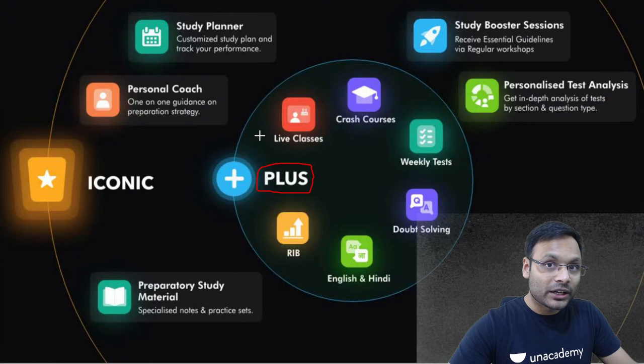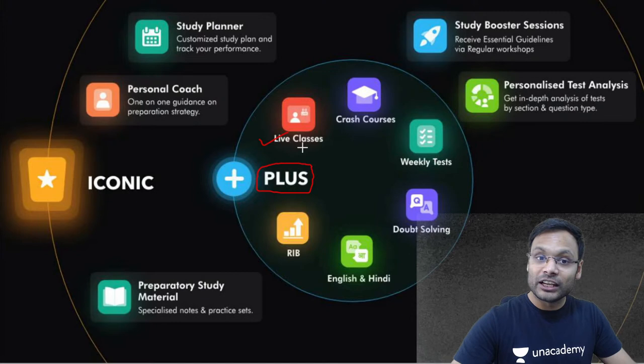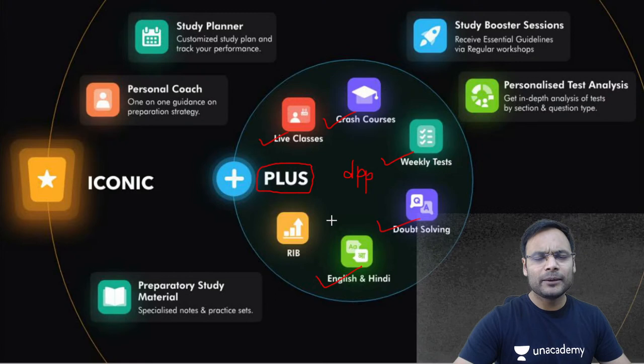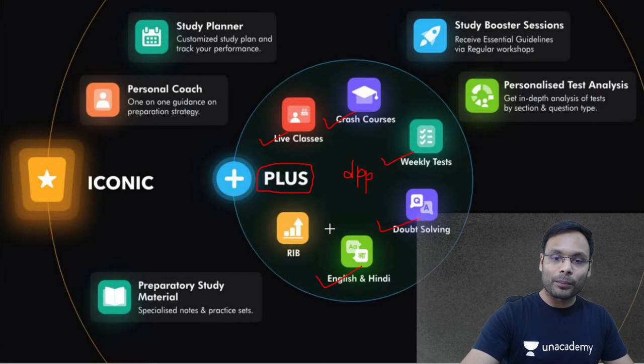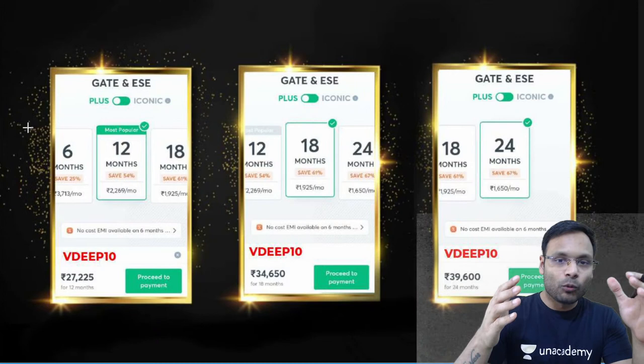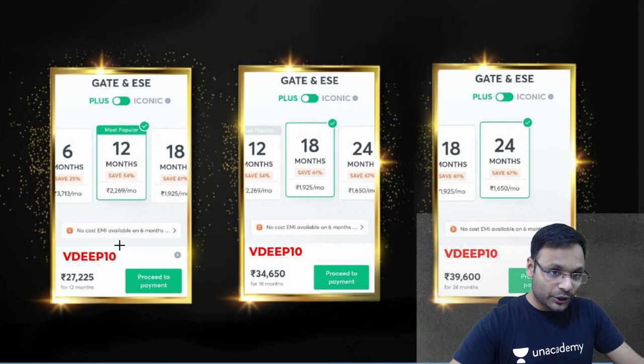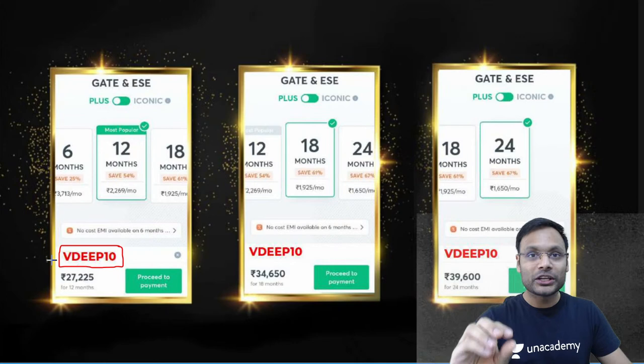This live Plus subscription gives you live classes, weekly tests, daily practice problems, educator guidance, crash courses, doubt solving, Hindi/English batches, and multiple other things for more systematic, organized preparation. Subscription is available for one month, three months, six months, 12, 18, and 24 months. During checkout, use code VDIEP10 for 10% discount — it's a code of connection, trust, and emotion between you and me, and you'll also get my personal guidance.